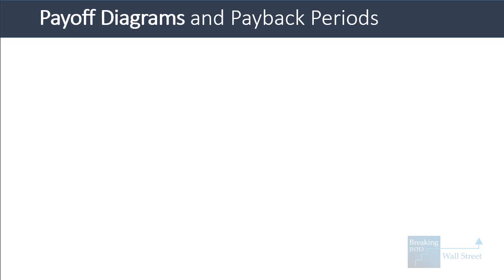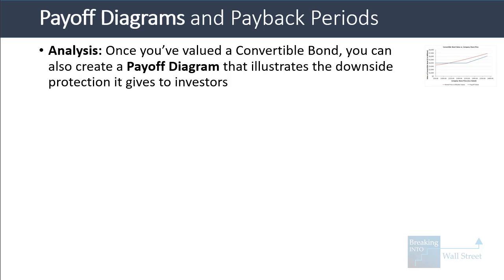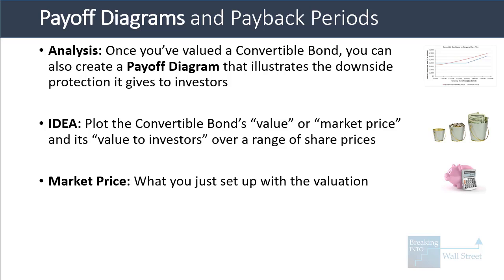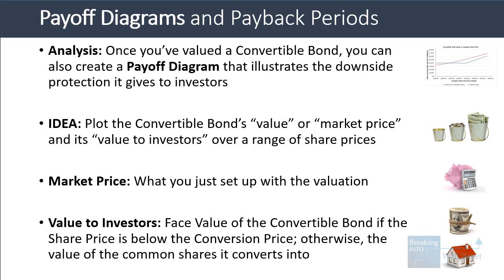Let's now talk about payoff diagrams and payback periods. Once you've valued a convertible bond, you can create a payoff diagram showing the downside protection it gives investors. The idea is to plot the convertible bond's market price and its value to investors over a wide range of share prices — especially useful for a highly volatile company. The value to investors is either the face value of the convertible bond if the share price is below the conversion price, or the value of the common shares it can convert into if the share price is above the conversion price.